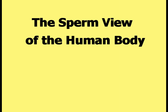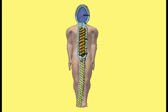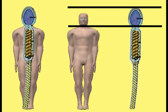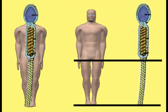The sperm view of the human body treats the human body as if it is a large sperm centered on the human body. The head of the sperm matches to the head of the human body, the body of the sperm matches to the torso, and the tail of the sperm matches to the legs.